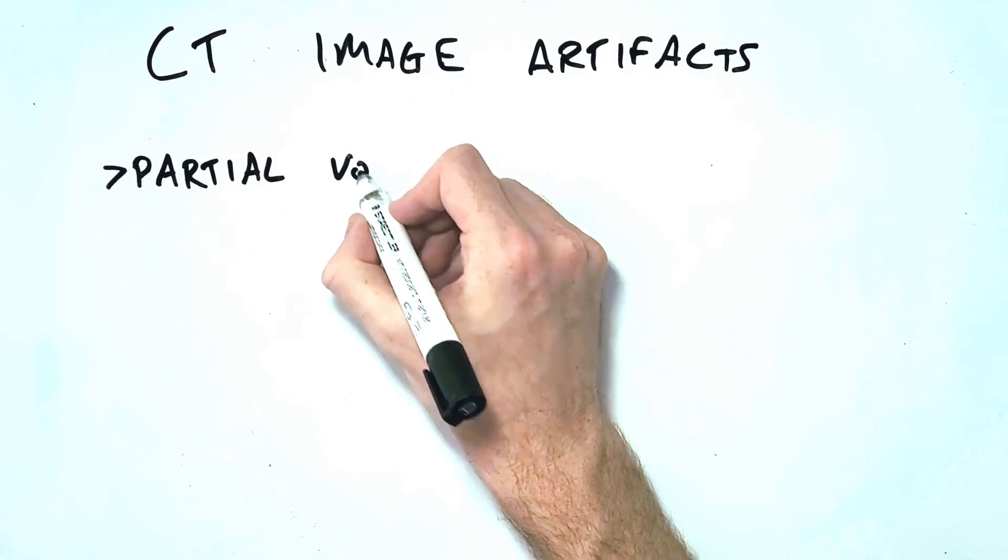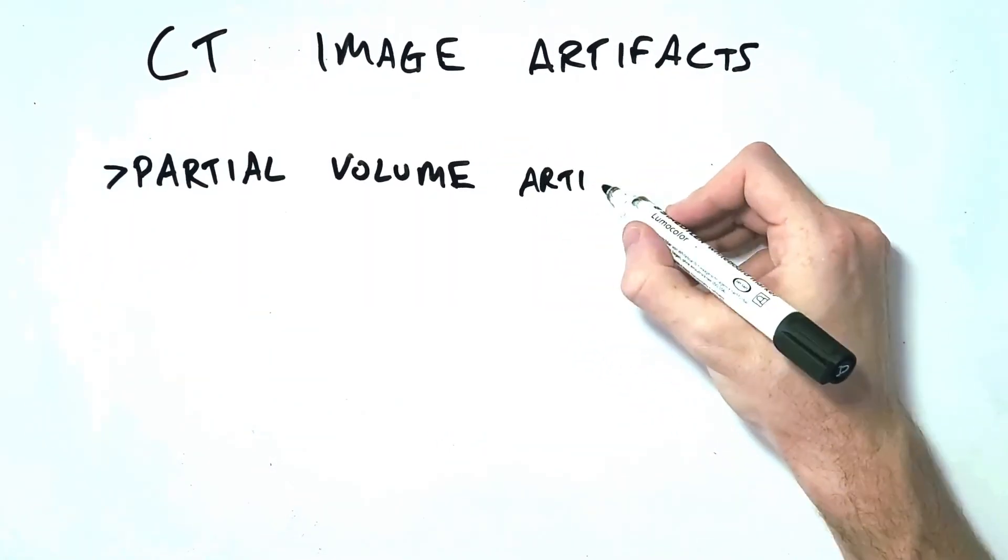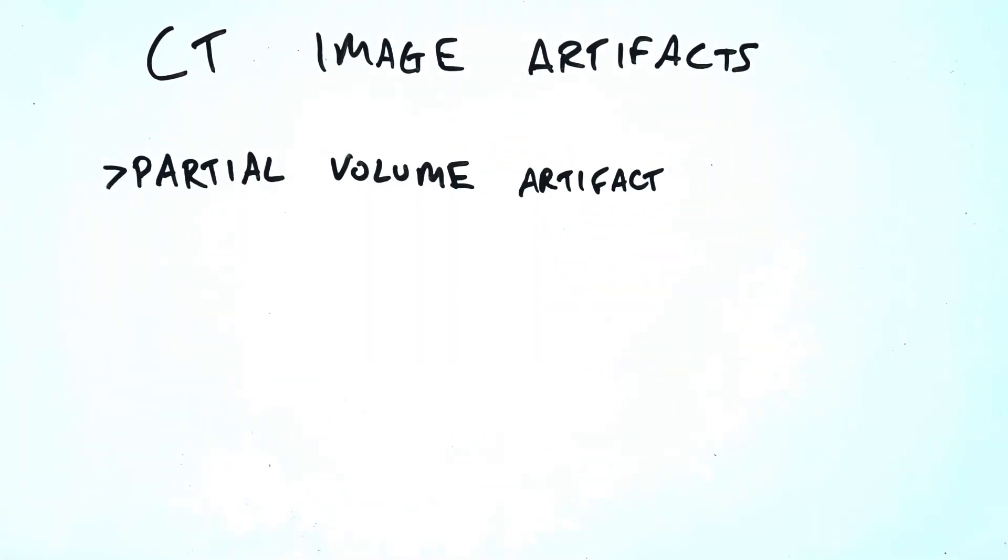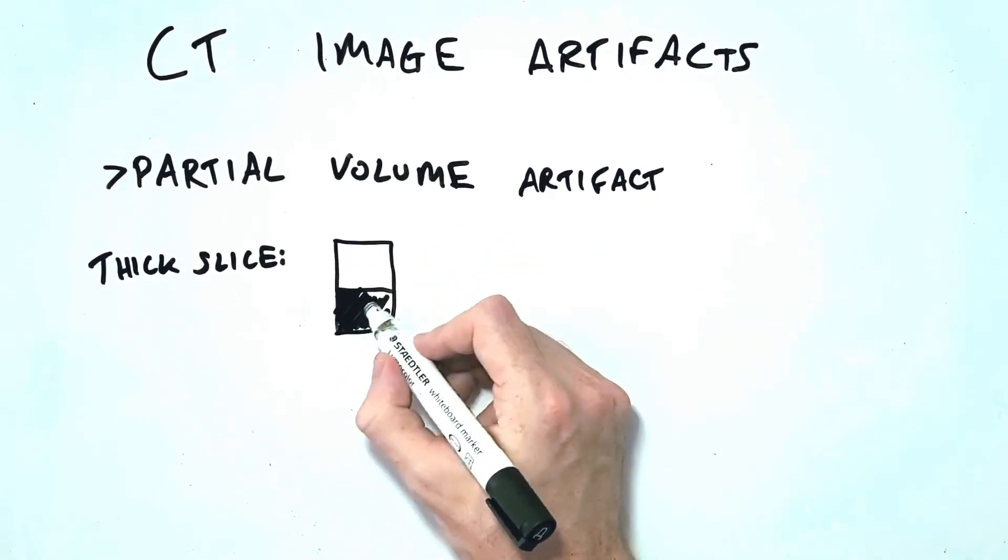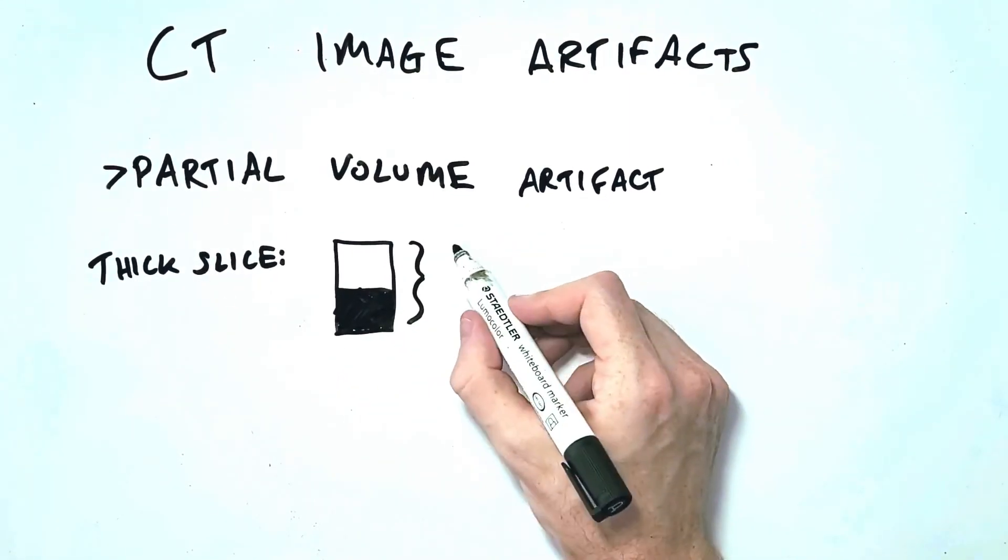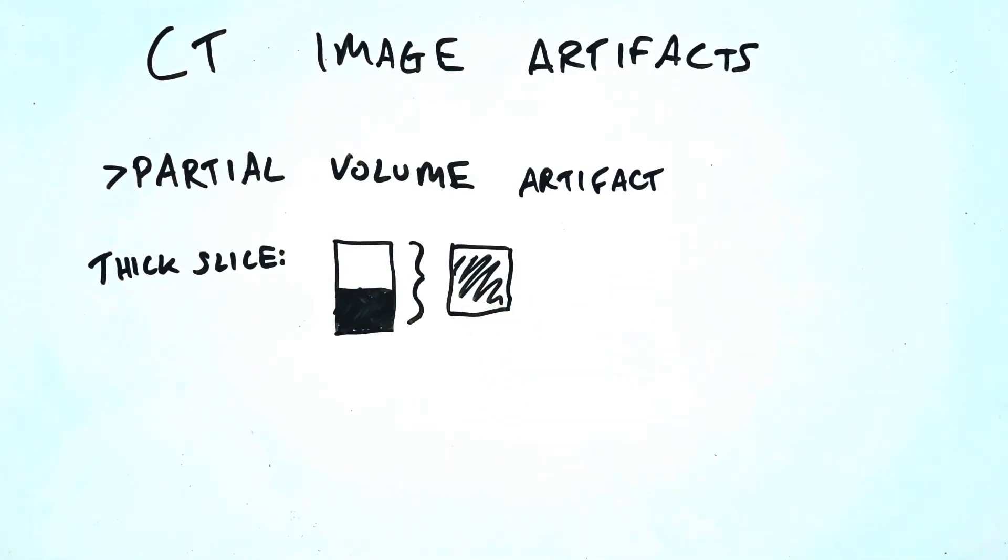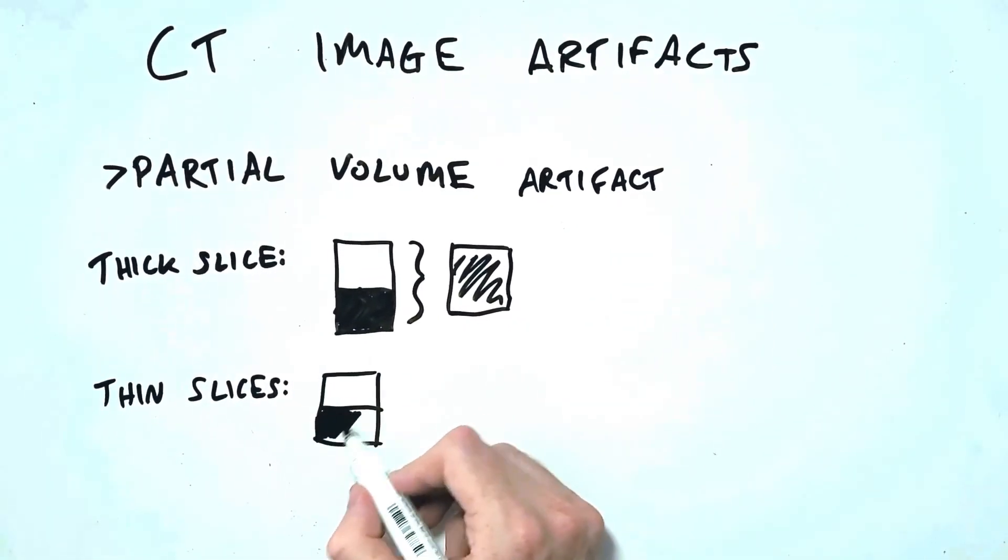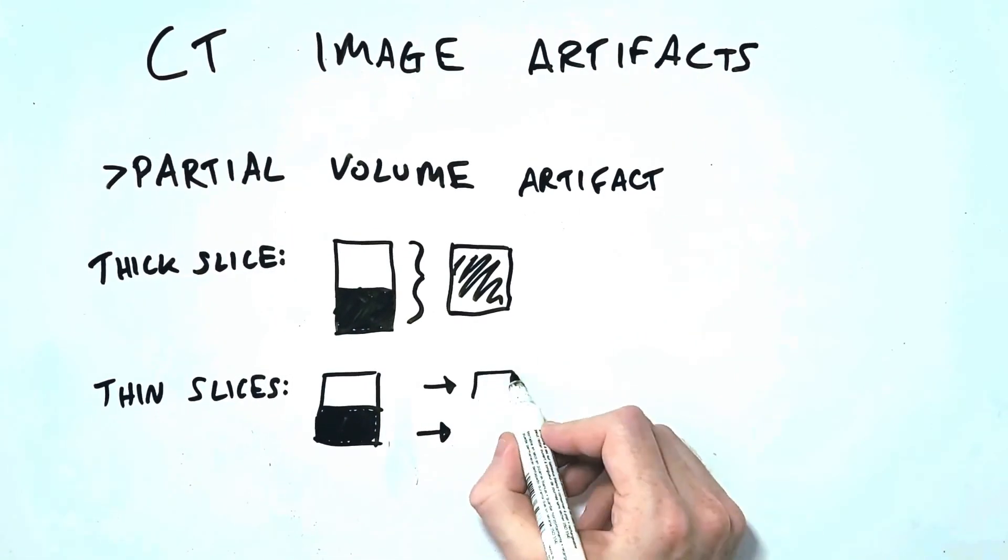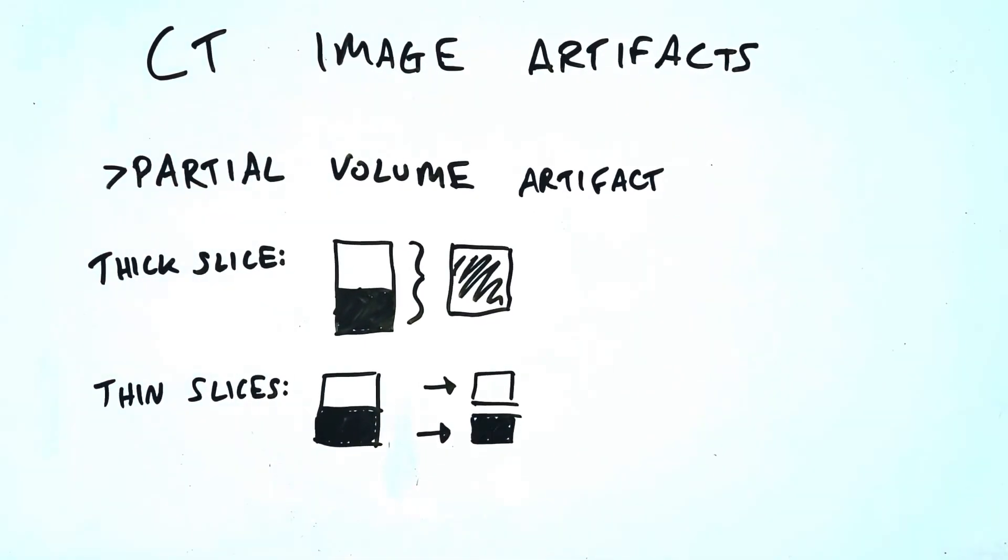Next up we have a partial volume artefact and this occurs when you have two structures of very different densities next to each other occupying the same voxel on a thick slice. If you have both black and white occupying the same voxel you will end up with an average grey, but that grey is not an accurate representation of what's actually happening in that voxel. We have black and white but we're seeing grey. The solution to this is to use thinner slices so that there's less volume being averaged within each slice.